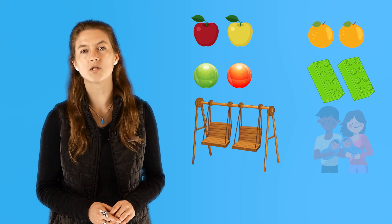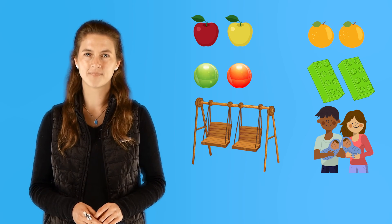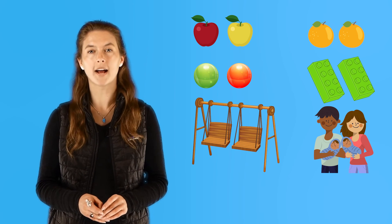It can be apples like we counted at the beginning. It can be oranges, or marbles, or blocks, or swings, or even twins. Anything. If you have two, you have a pair.